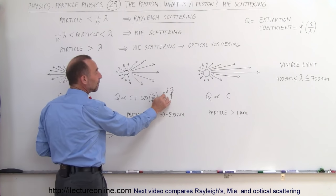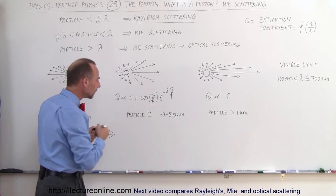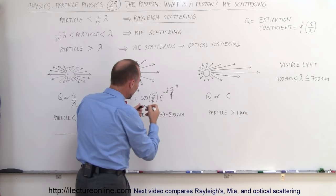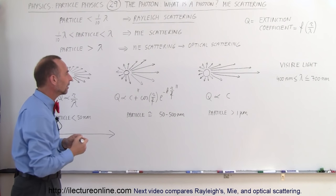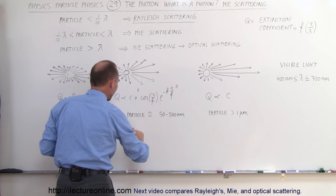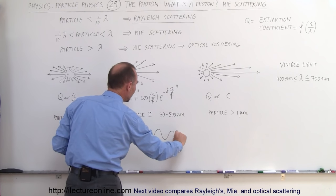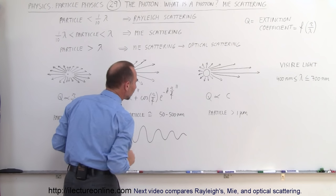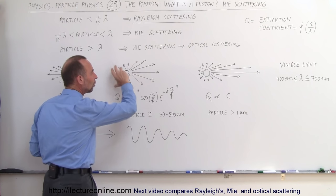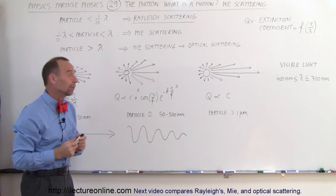Therefore, we have an e to the minus k times r over lambda term — I'll put that in quotation marks because that's something I kind of came up with to give a feel for it. So the amount of scattering will depend upon some sinusoidal function that seems to diminish as r over lambda gets bigger. We kind of have these components related to the amount of scattering experienced in Mie scattering.